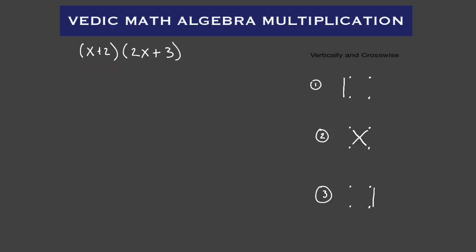Next: X plus two times two X plus three. First, we're going to put it like this — X plus two and two X plus three. We're multiplying these together. Step number one, we start at the left-hand side: X times two X, or two X times X. Two X times X gives us two X squared. So there's our first term: two X squared.